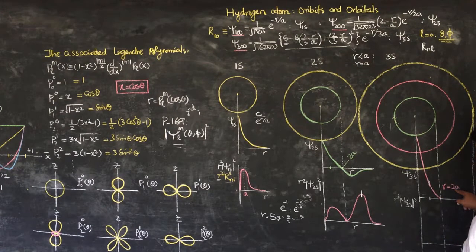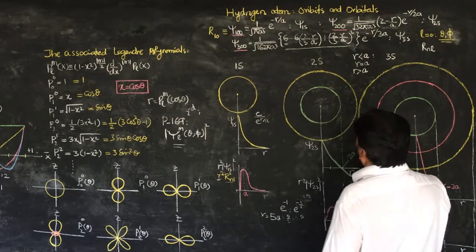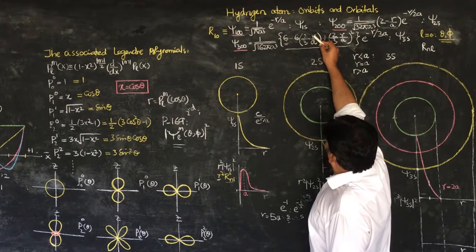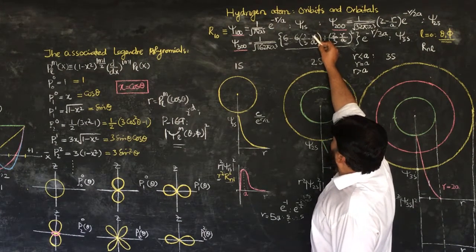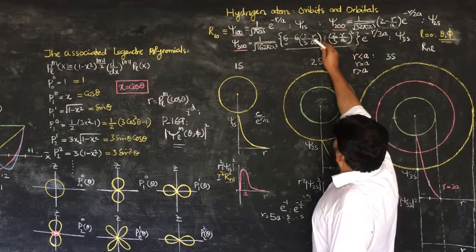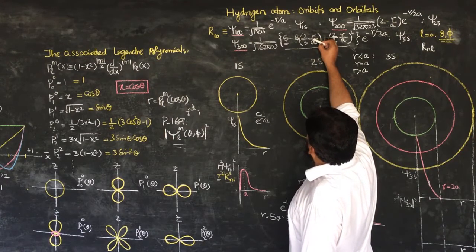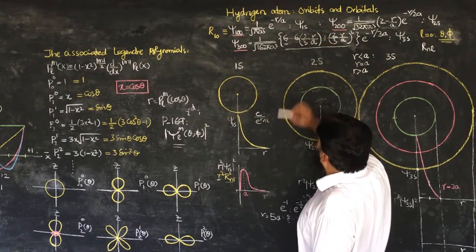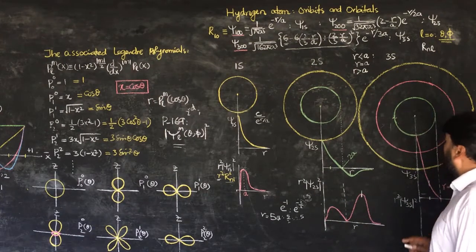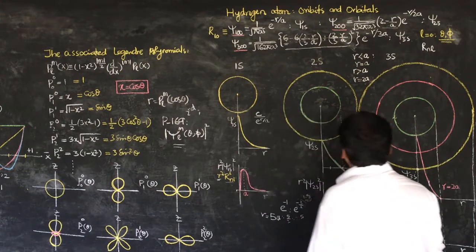When r is greater than a, the r/a ratio gives a value greater than 1 but less than 2. This still contributes positively, and overall the wave function remains positive. The decaying continues until we reach r equals 2a.